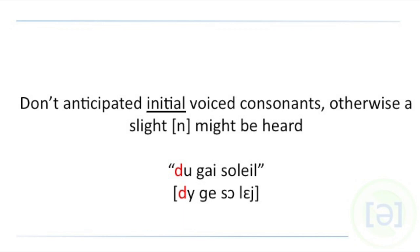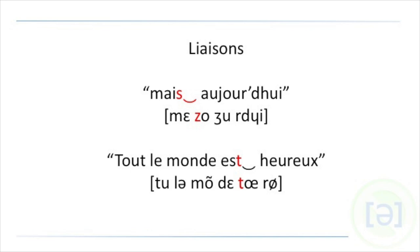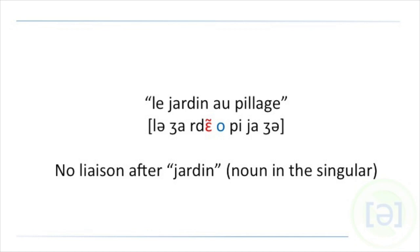There are very few liaisons in this aria. Early on, we have mais aujourd'hui, where we need to hear the Z sound of the S, and right at the end, we find tout le monde est heureux, where we need to hear the T. But we do not want to make a liaison in the phrase le jardin au pillage. As awkward as it is to have these two vowels back-to-back, an open nasal E followed by a closed O, the noun jardin is in the singular, and we seldom make a liaison after a singular noun.